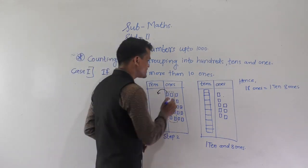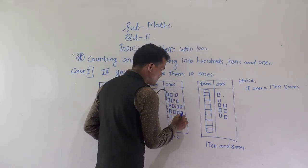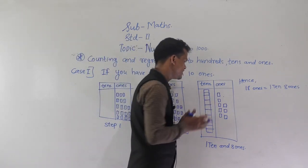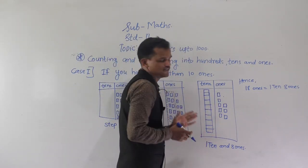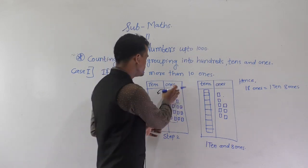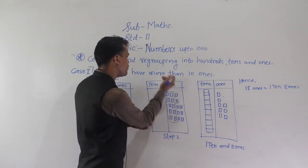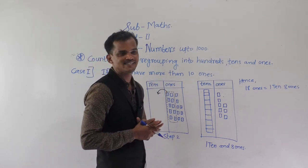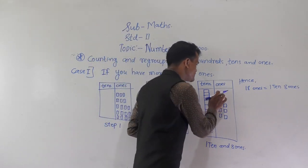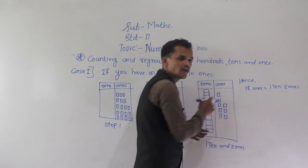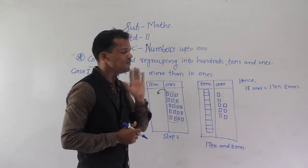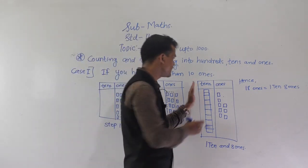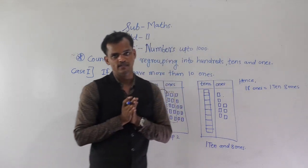How many bricks are left? 1, 2, 3, 4, 5, 6, 7, and 8. So in the third step, confirming the count: 1, 2, 3, 4, 5, 6, 7, and 8. So 18 ones is equal to 1 ten and 8 ones.